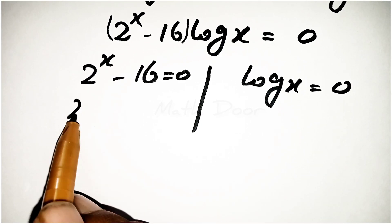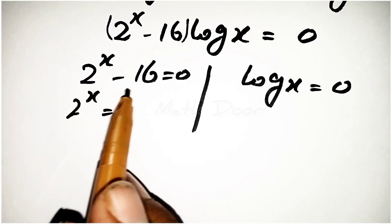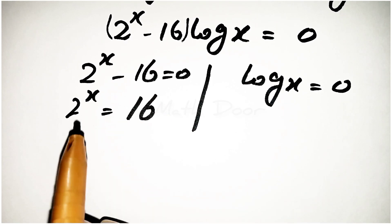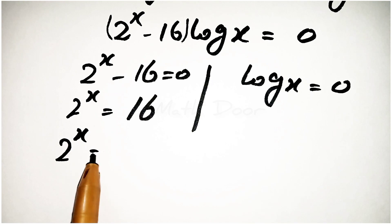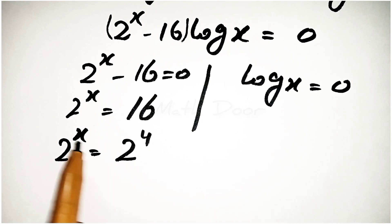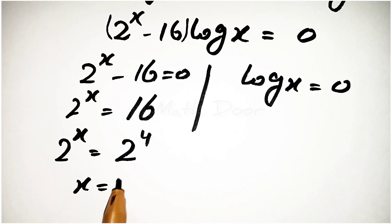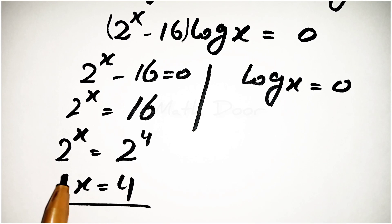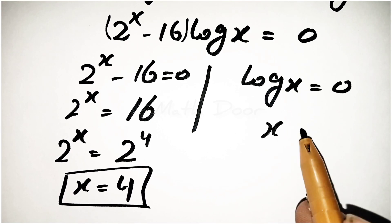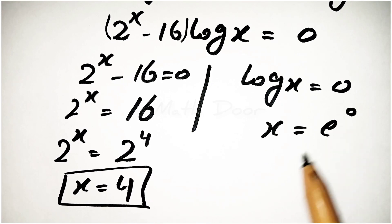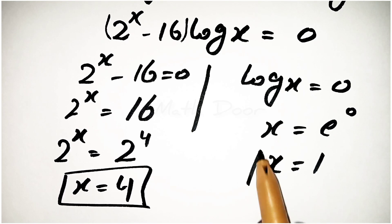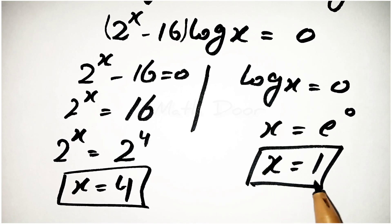For the first case, taking minus 16 to the right side gives 2 power x is equal to 16, which is 2 power 4. Since the base is the same, the powers are equal, so x is equal to 4 — the second value of x. For the second case, log x is equal to 0 means x is equal to e power 0, so x is equal to 1. This is the third value of x.